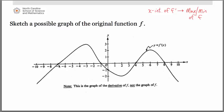At x equals negative 7, the derivative graph is changing from negative to positive. That means the original is going from decreasing to increasing — it must be a relative minimum. So on my graph at x equals negative 7, I'm going to place a minimum point. You can put it as high or low as you want, since the directions say 'sketch a possible graph.' The y-values are flexible. I'll make a note that this is a minimum point.